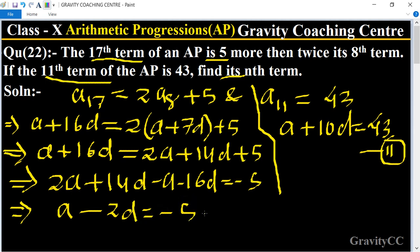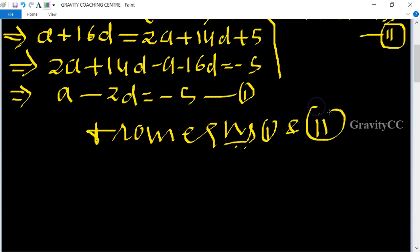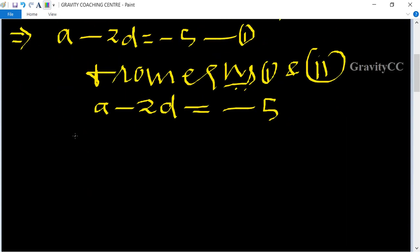From equations first and second, a - 2d = -5 and a + 10d = 43.